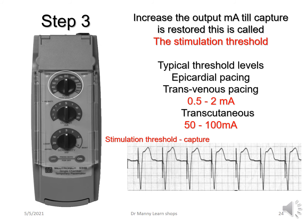Typically, the stimulation threshold in epicardial and transvenous pacing is around 0.5 to 2 milliamps. In transcutaneous pacing, because it's outside the body and the skin increases trans-thoracic resistance — stopping electricity from reaching the heart — you need higher outputs. Typically in transcutaneous pacing, you need 50 to 100 milliamps to achieve capture or the stimulation threshold.